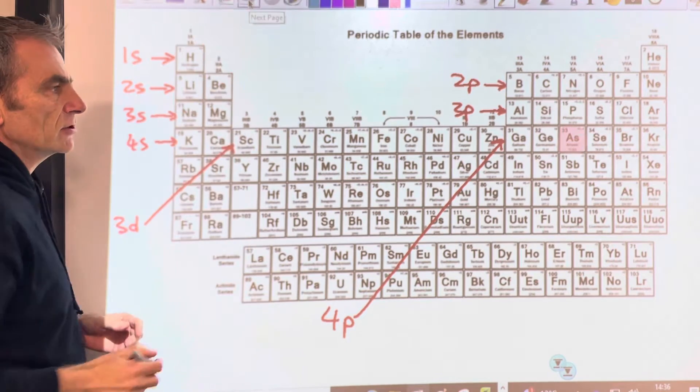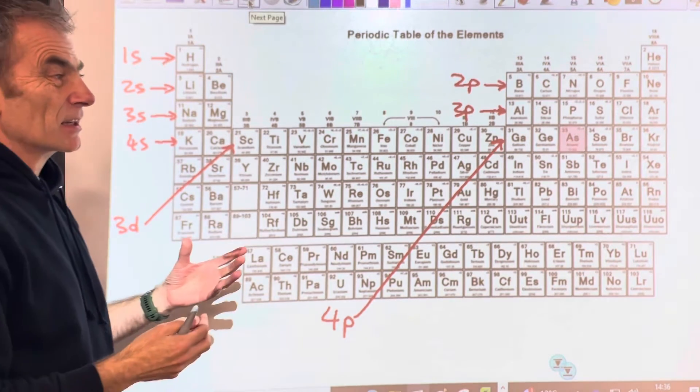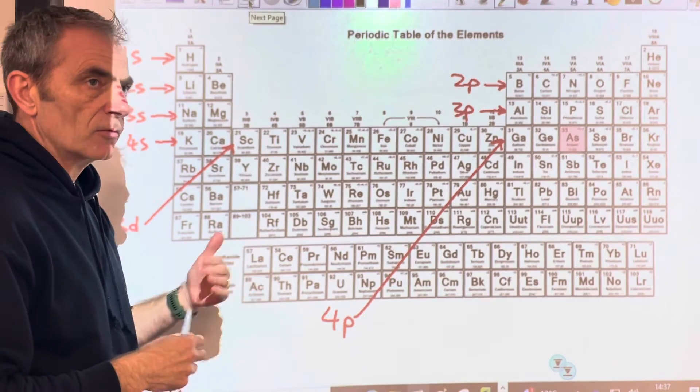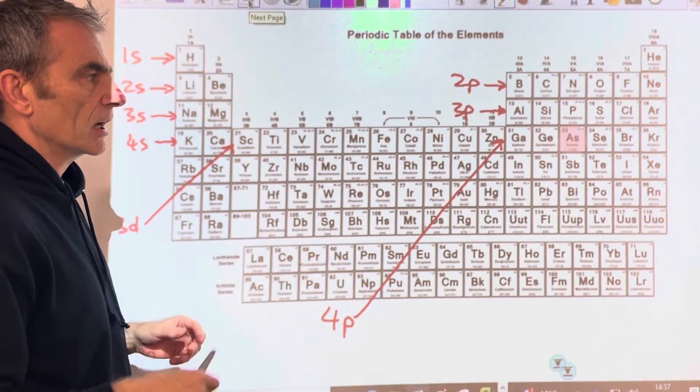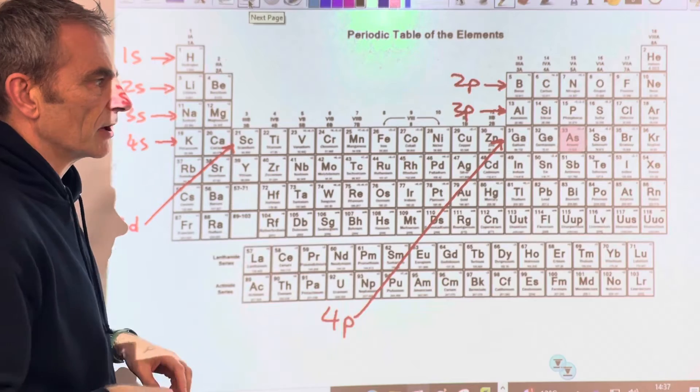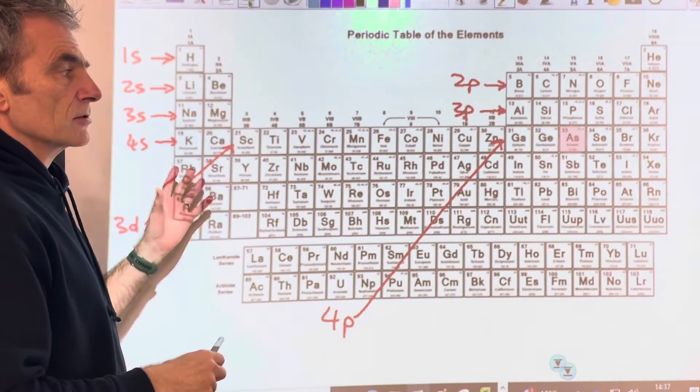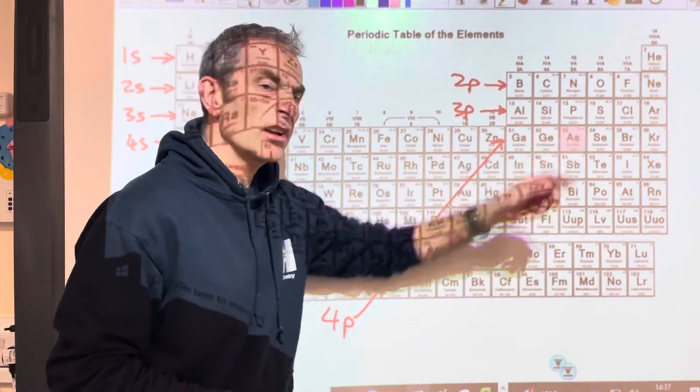So we'll just have a look at some electron configurations in shorthand form. Basically, the shorthand just saves you writing 1s² 2s² - you can sort of condense the first part of the electron configuration. So it's really helpful for elements with a lot of electrons.